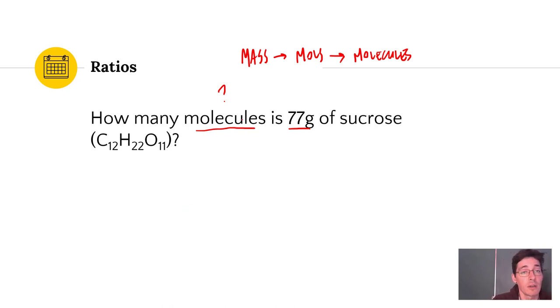So our algebra is we start with 77 grams of sucrose, C12H22O11. And I use a t-chart to help get units in the right spot. I want to cancel out grams, so that's going to go on the bottom. And I want to convert to moles, so that goes on top. One mole of a substance is equal to its formula weight.